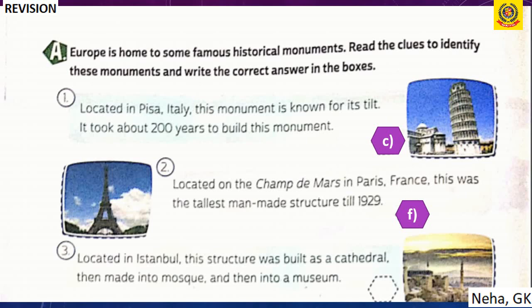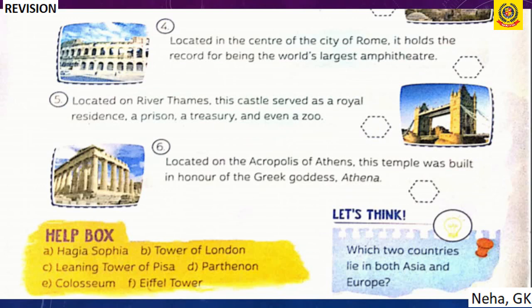Third — located in Istanbul, built as a cathedral then a mosque then a museum — Hagia Sophia. Fourth — in the center of Rome, the world's largest amphitheater — the Colosseum. Fifth — on the River Thames, serving as a royal residence, prison, treasury and zoo — the Tower of London. Sixth — on the Acropolis of Athens, built in honor of the Greek goddess Athena — the Parthenon.